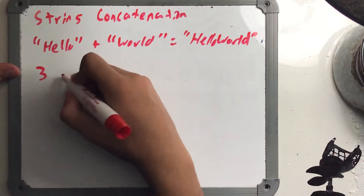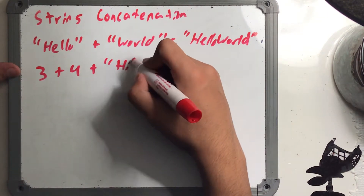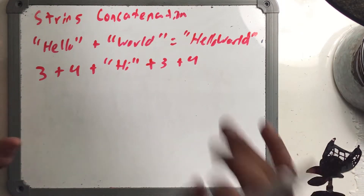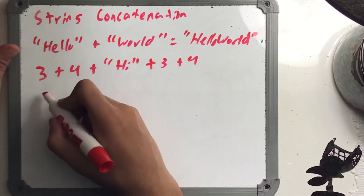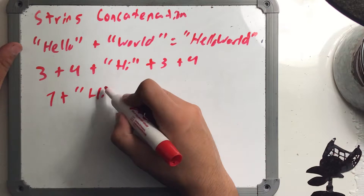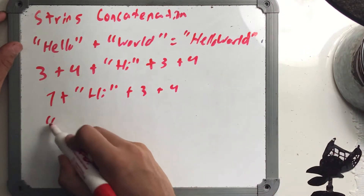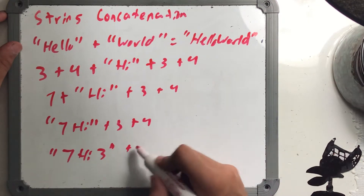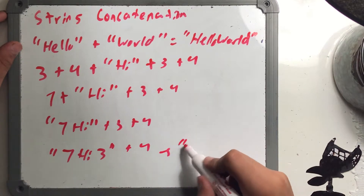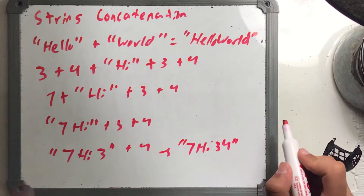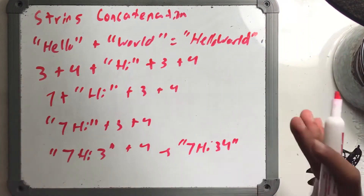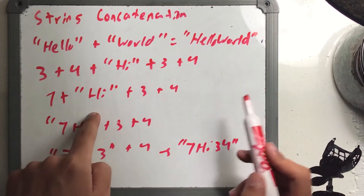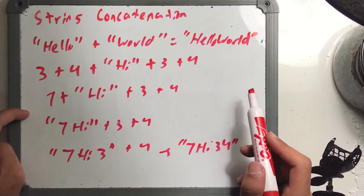What if you had 3 + 4 + "hi" + 3 + 4? You evaluate everything to the left of the string first, so 3 + 4 = 7. Then the magnet takes effect: 7 + "hi" becomes "7hi", then "7hi" + 3 becomes "7hi3", then + 4 gives "7hi34". Everything to the right of the string just gets pulled along as concatenation.